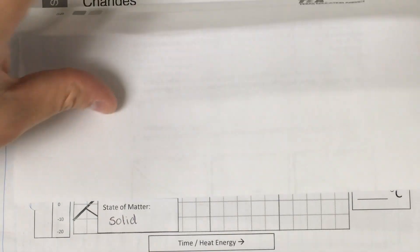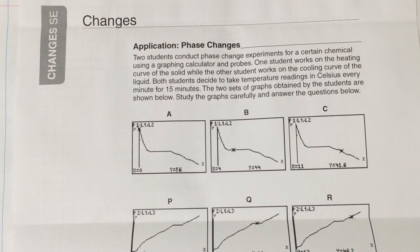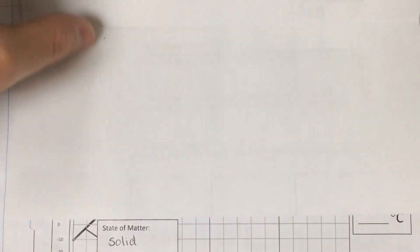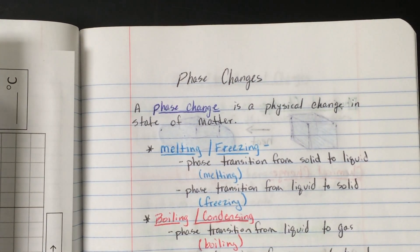The last thing that you need for this page is to glue the application phase change worksheet that we did in class into the left hand margin. There's just three questions on that, and then you'll be done with page 10 of your interactive notebook on phase changes.